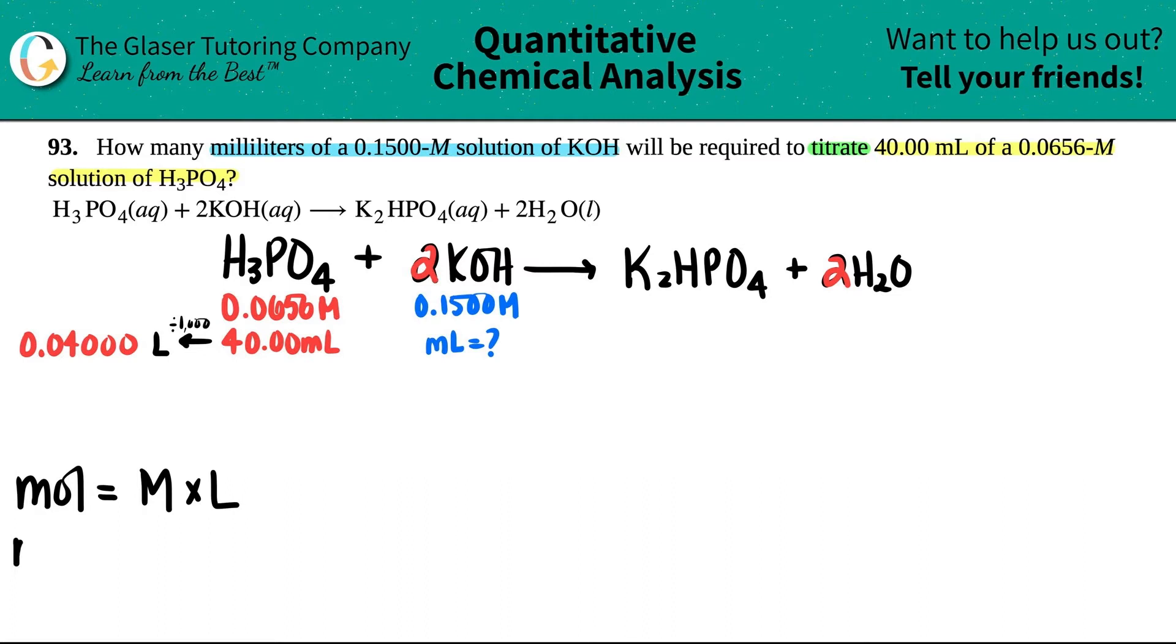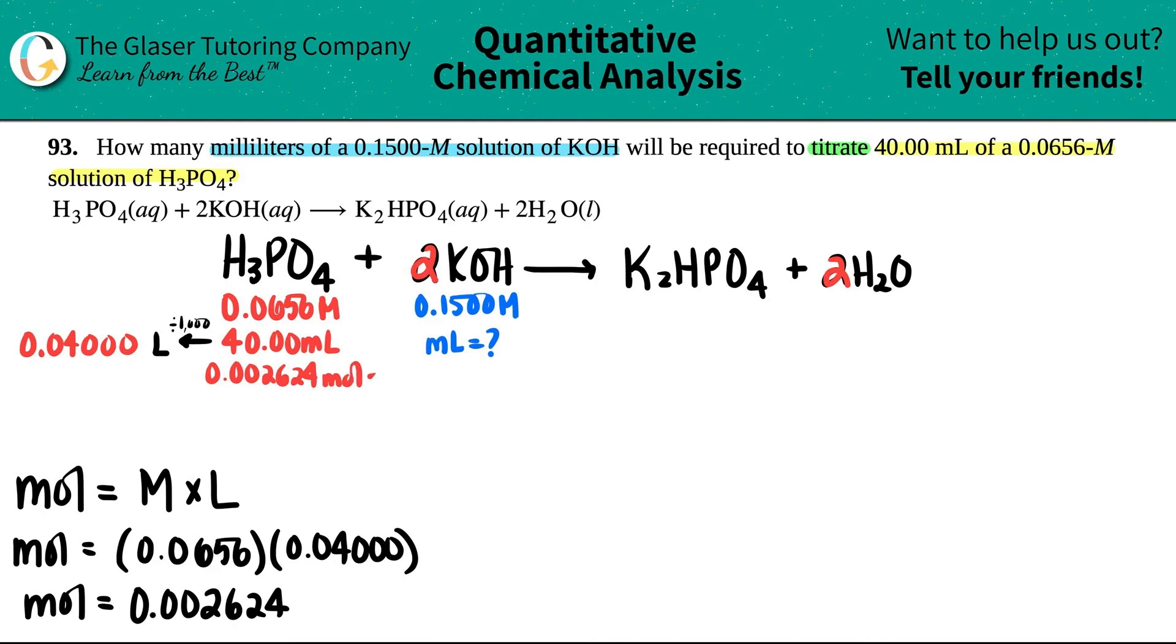Now let's just find out what the moles are for the H3PO4. Moles equals the molarity, 0.0656 times 0.0400. And the moles of the phosphoric acid is 0.0656 times 0.04. I get a pretty small number, 0.002624 moles. So that's going under here. I have 0.002624 moles. Now since I'm done with that, I can basically get rid of this.